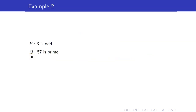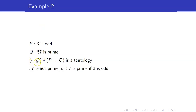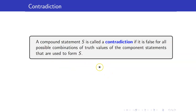If we take P to be the statement '3 is odd' and Q to be '57 is prime,' we have seen that 'not Q or P implies Q' is a tautology. In sentence form, this becomes: 57 is not prime, or 57 is prime if 3 is odd. Recall that the word 'if' introduces the premise.